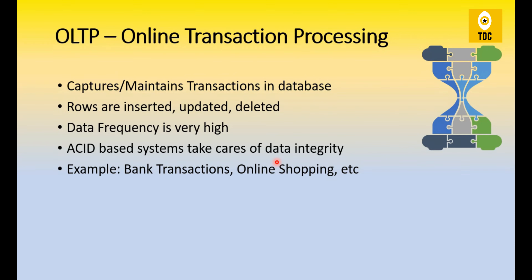In case of OLTP, data integrity matters a lot because it is customer-facing in most cases. For example, in any banking transaction, debit and credit transactions happen — your account balance gets updated based on those transactions. Another example is online shopping — when you place an order for a product, that goes into a database in the backend and stores the details.